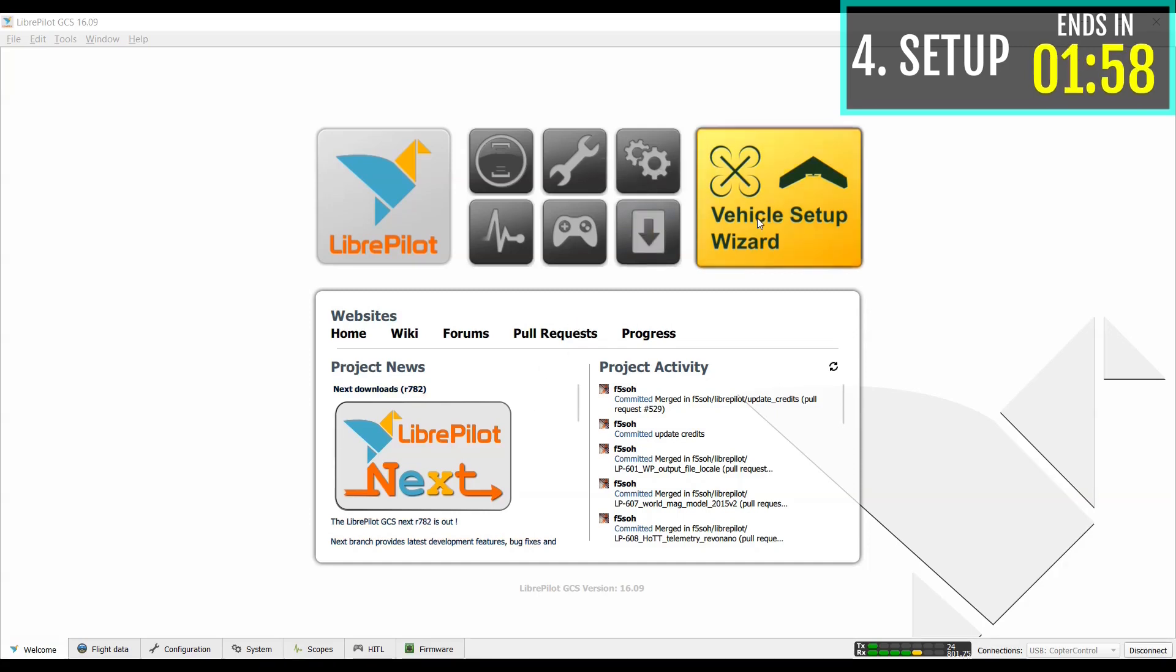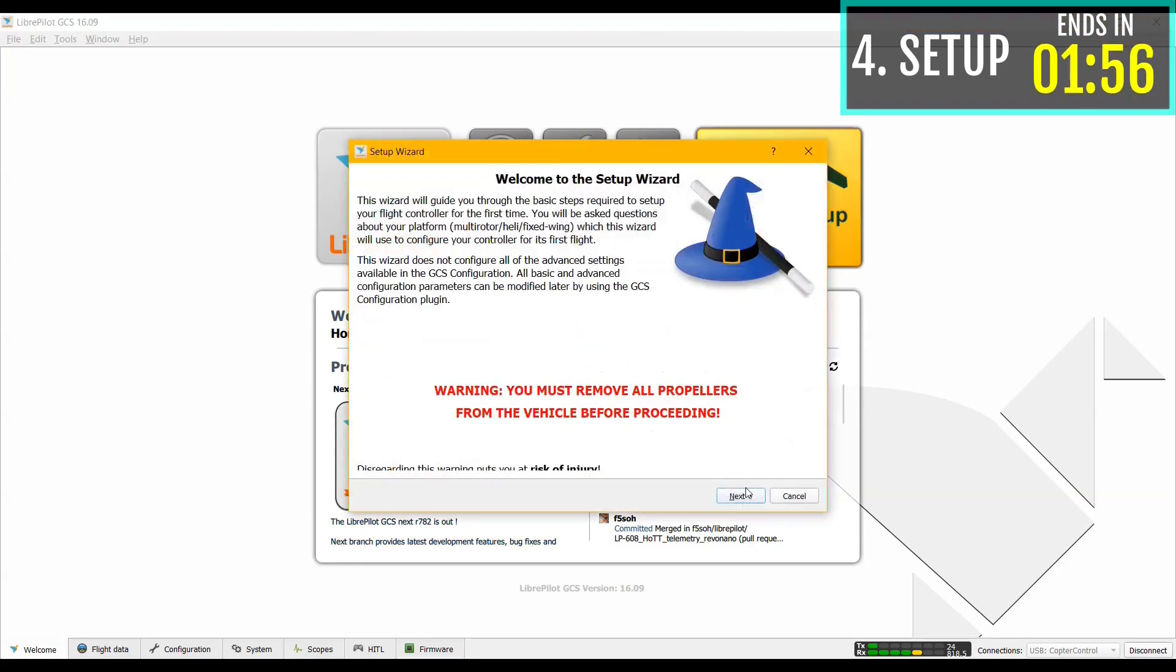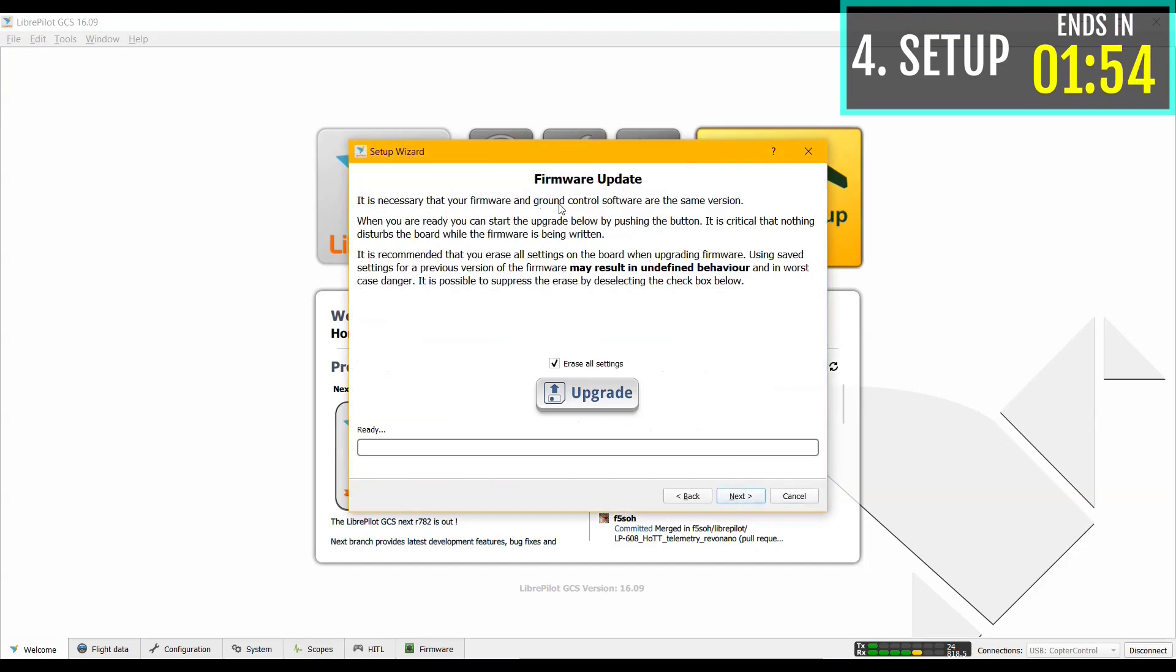Click Vehicle setup wizard, click next. This is the most important part, you have to update the firmware. Make sure you select erase all settings and click upgrade.